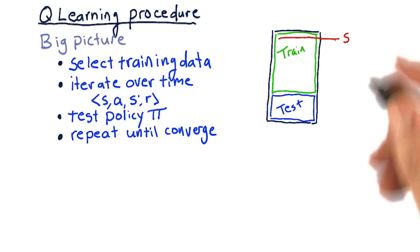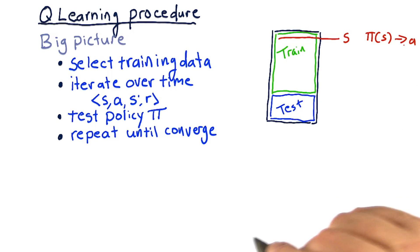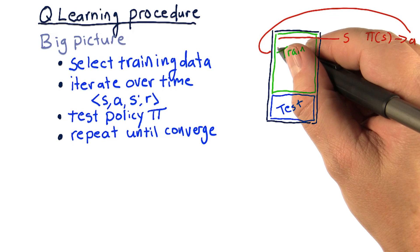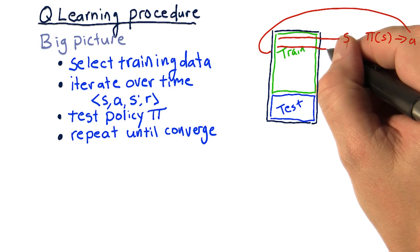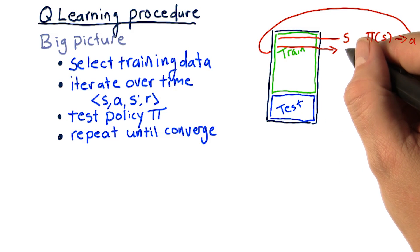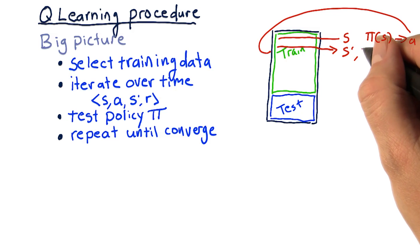We consult our policy and that gives us an action. So we take that action, plug it into our system here, evaluate the next state. And we get our S prime and our reward.